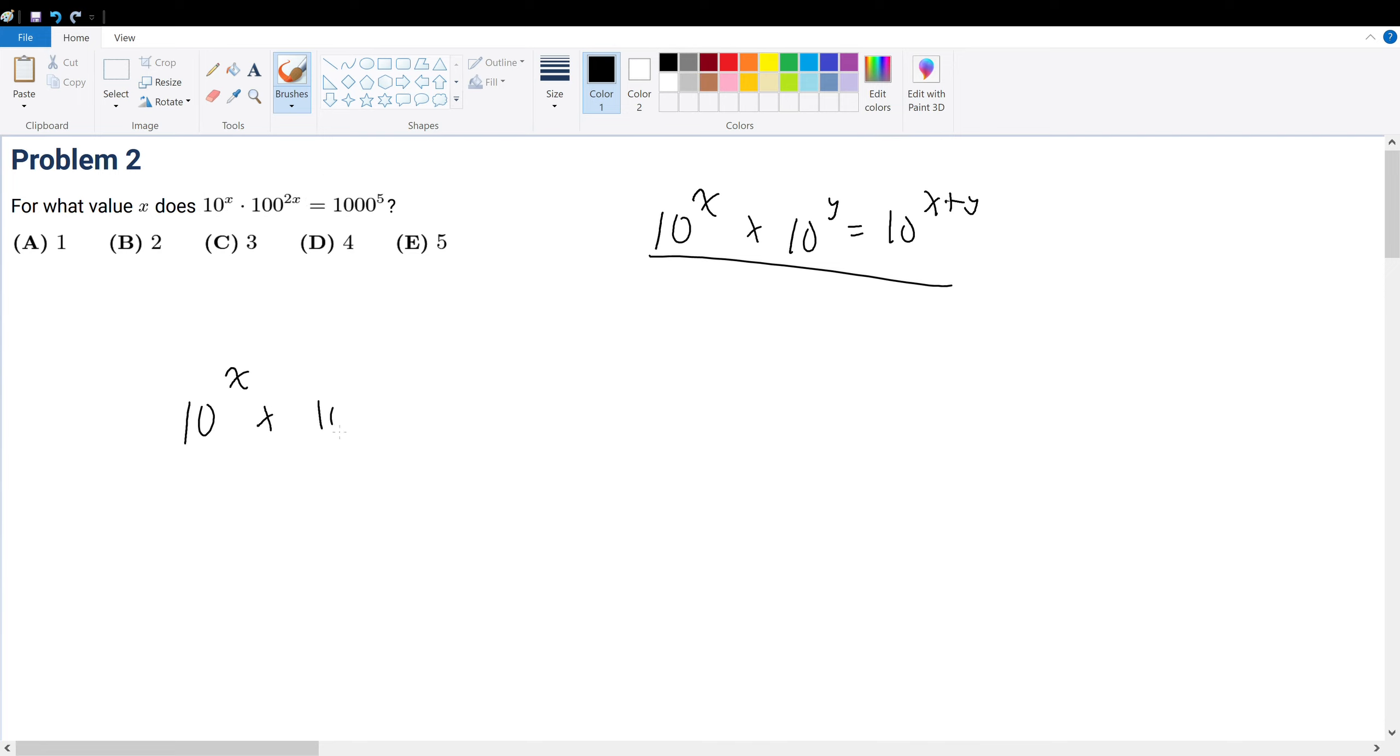the x times 100. 100 is 10 squared, so 2 times 2x, that's 4x, which is the same thing as 10 to the third 15. So that means x plus 4x must be equal to 15. 5x is equal to 15, x is equal to 3. So our final answer will be answer choice C.